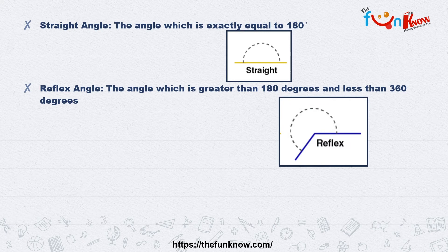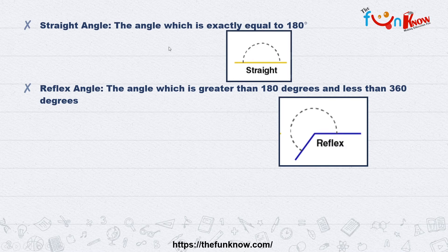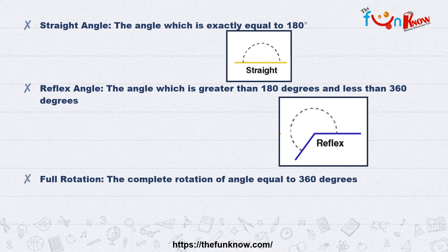Then there is something known as reflex angle. An angle is greater than 180 degrees but less than 360 degrees — it is not forming a whole rotation. It is less than 360 but greater than 180, meaning it is completing more than a half circle but not the full circle. This will be known as reflex angle.